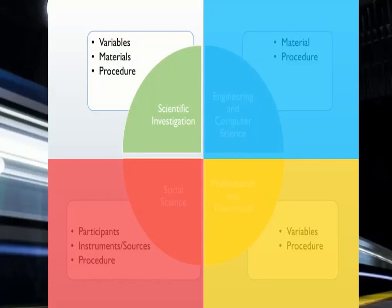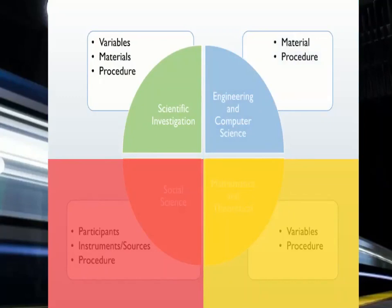For engineering and computer science type projects, there are no variables, but the materials and procedure section must be completed. The procedure provides the steps taken in developing, creating and testing your functional prototype, process or solution. When developing a process or prototype, it is important to test, redesign and retest the process or prototype.